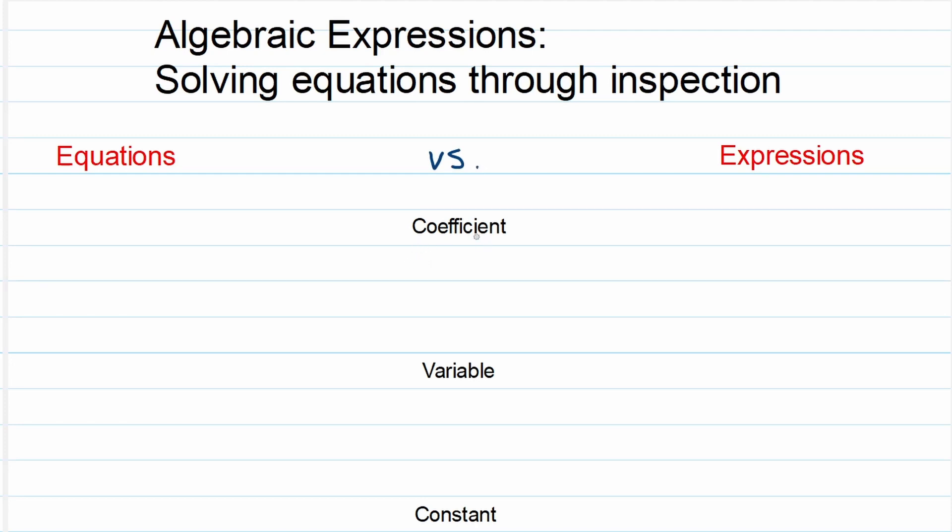So what is a coefficient? The coefficient is the number that accompanies the variable. The variable is the unknown. So let's look at an example. 2x plus 4 equals 7. That 2 right in front of the x, this is the coefficient. As you can see it accompanies the variable. The variable is the unknown. In this case you can see that is the x.